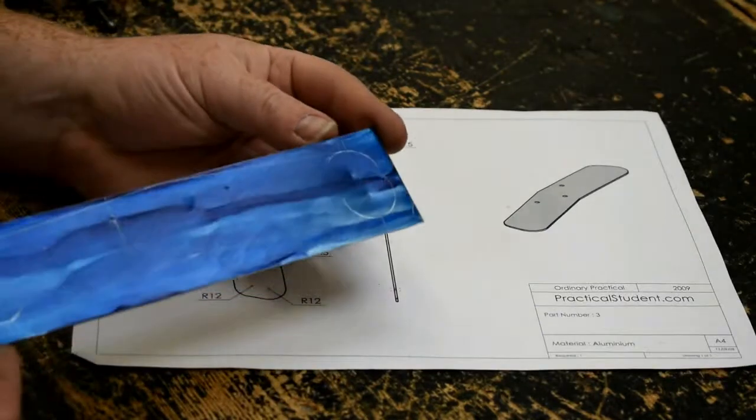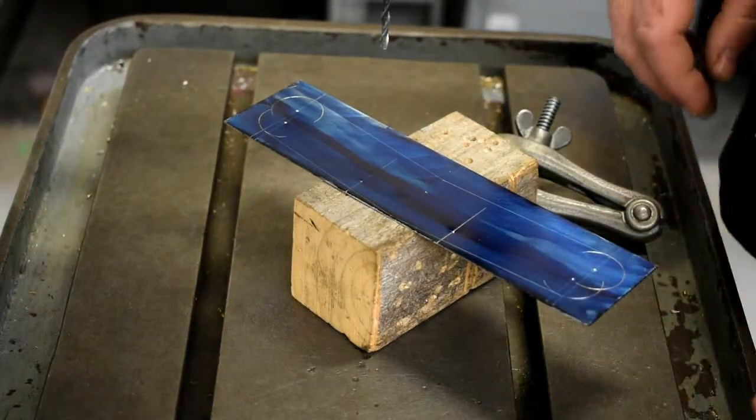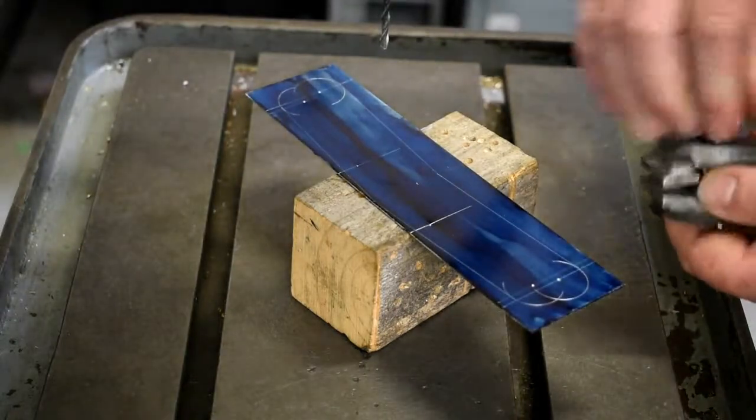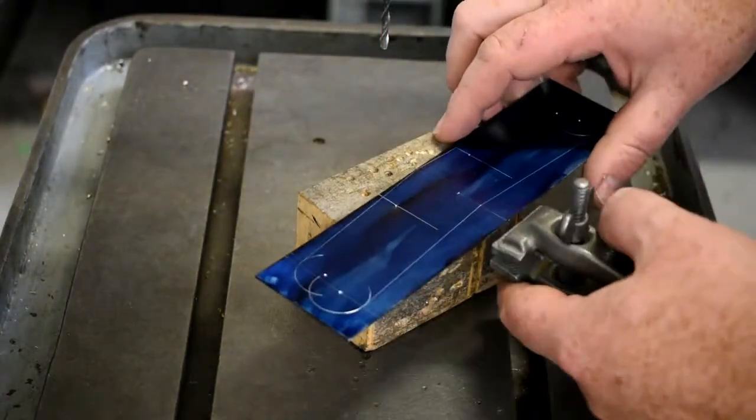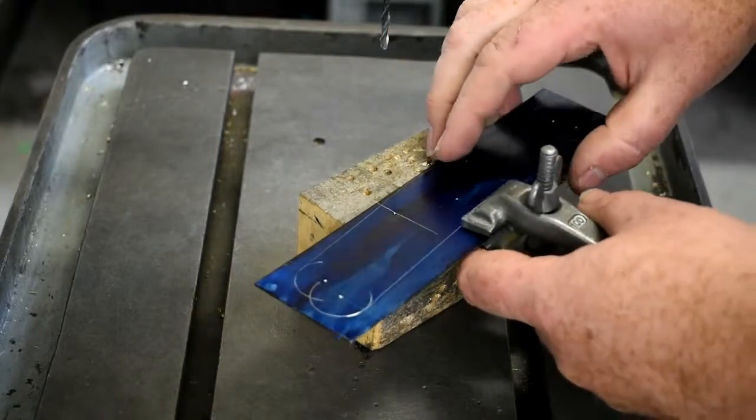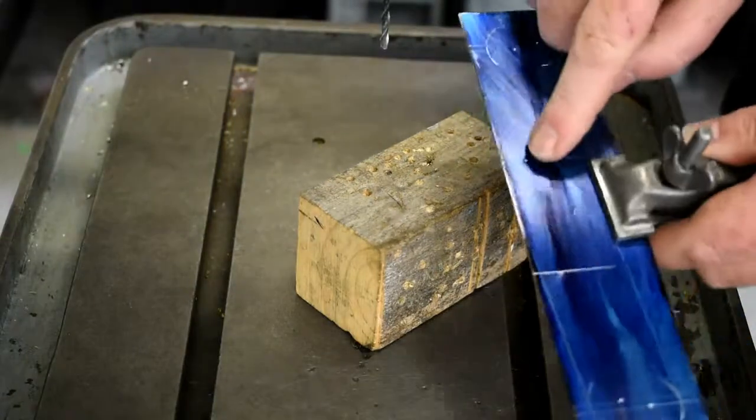And that's our part marked out. Right, so we're going to drill part number 3 now. We only have three holes to drill in it. So as usual putting it in the clamp and wearing goggles. We're going to drill the three holes.